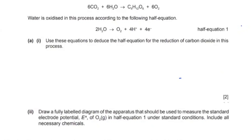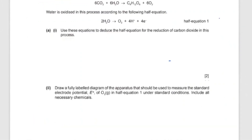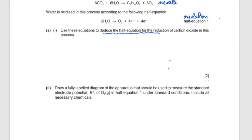So now, what's over here is the overall reaction for photosynthesis. That's your overall reaction. Water is oxidized in this process to the following half equation. So this equation over here is your oxidation half equation, and that's your overall equation. They're asking us to use these equations to deduce the half equation for reduction.